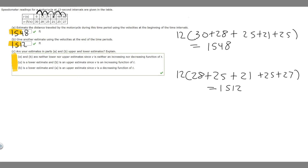Then for C, it says are your estimates in part A and B upper and lower estimates? So basically it's asking whether or not we have an overestimation or underestimation. The way you can tell this is just by looking at the options. It says A is a lower estimate and B is an upper estimate because V is an increasing function of T.